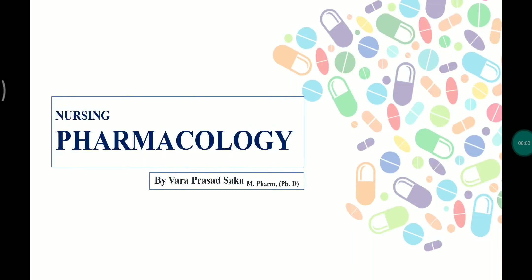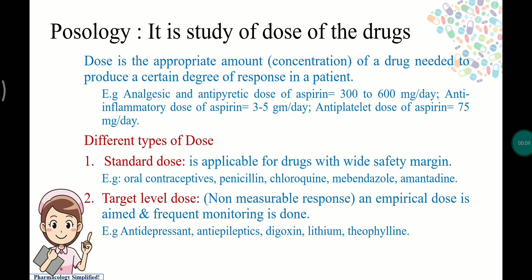This is Part 3 of Unit 1, covering dosage calculation and remaining concepts. Dosage calculation is defined under posology, which is the study of the doses of drugs. A dose is the appropriate amount or concentration of a drug needed to produce a certain degree of response.